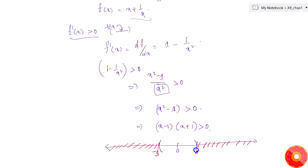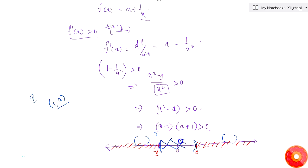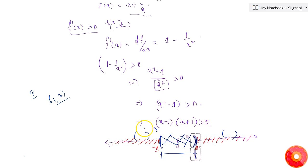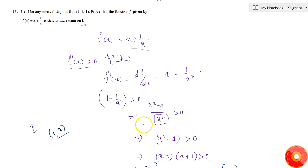Except for this region, we are given that I is a set which is disjoint from (-1, 1), meaning I lies elsewhere — it can be here or there on the number line, but not in the region (-1, 1). Since f(x) is strictly increasing in the whole region except (-1, 1), and I lies in the strictly increasing area, f(x) is strictly increasing in the given interval I.